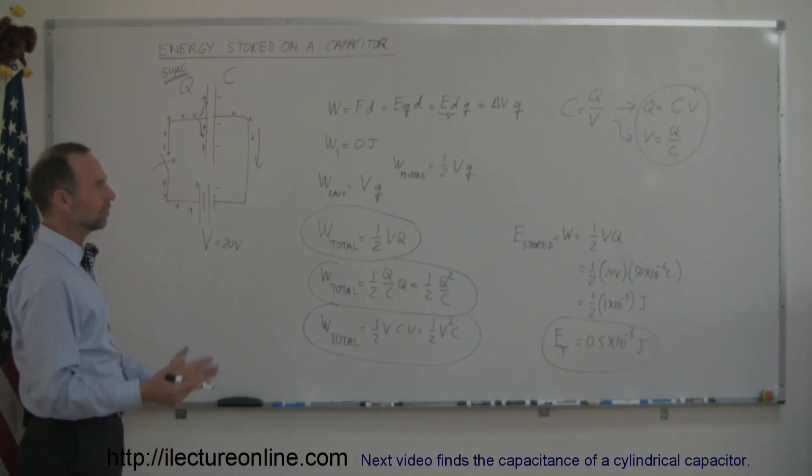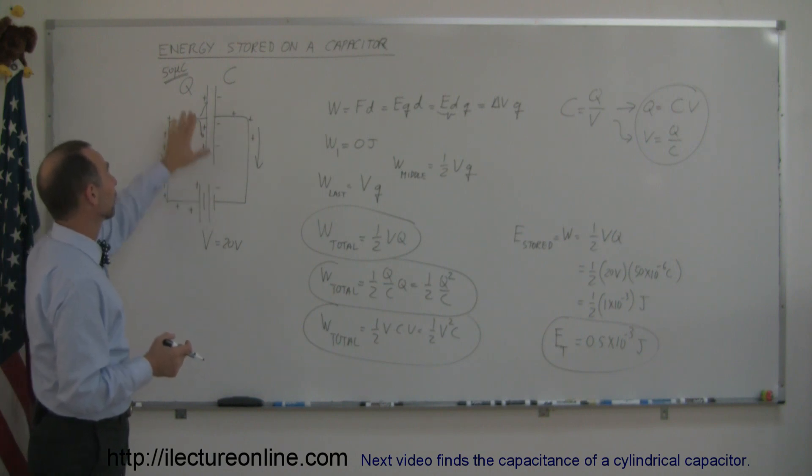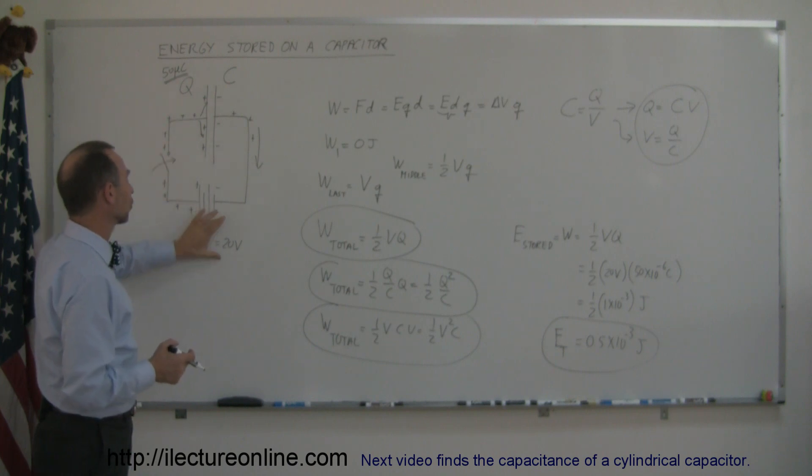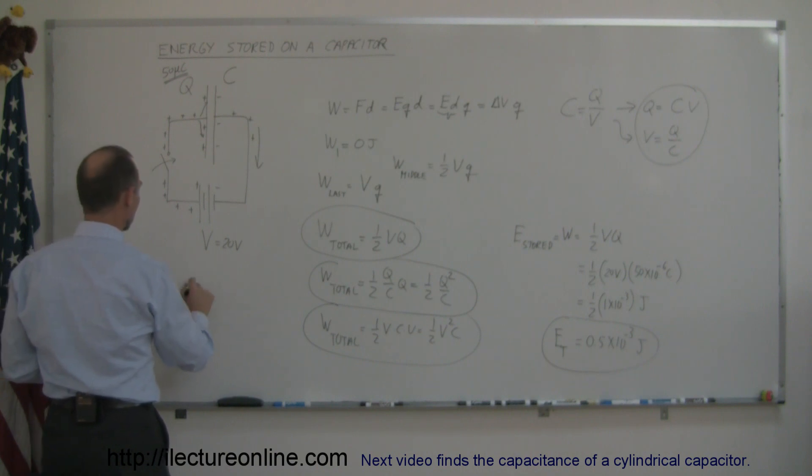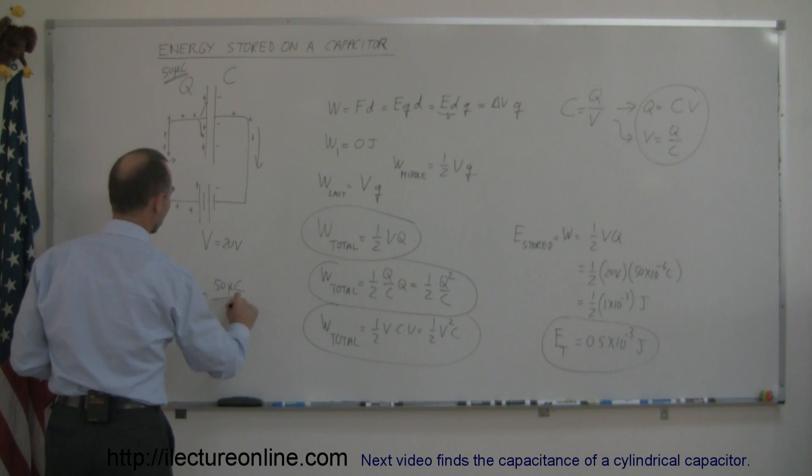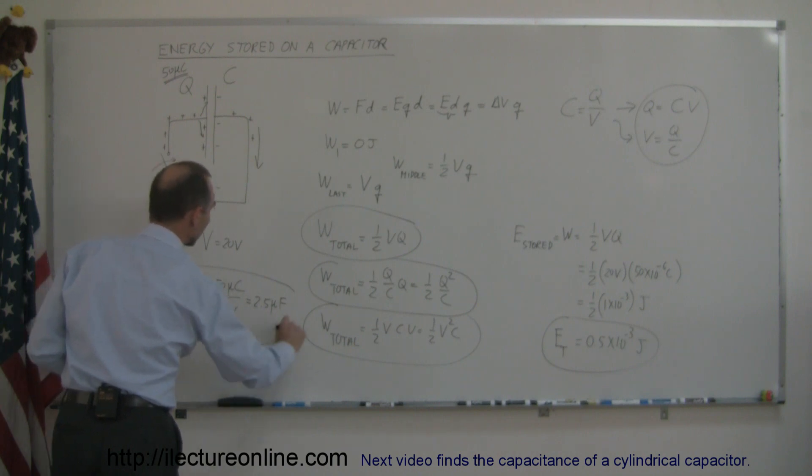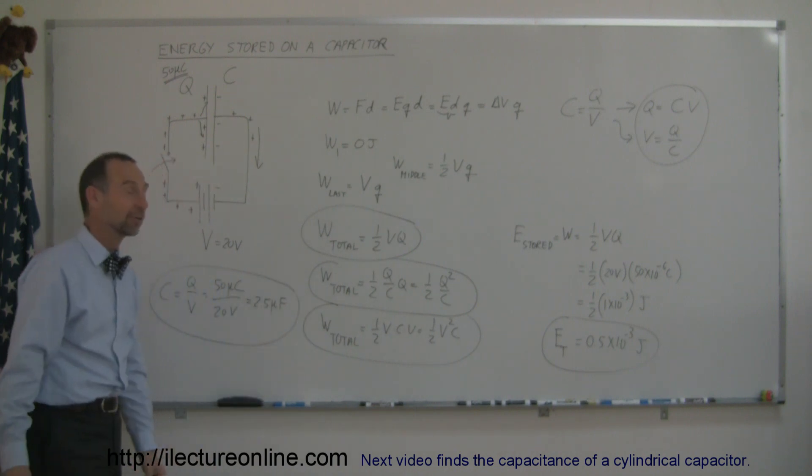And just for, let's see if we remember this, how big is the capacitor? What is the capacitance of a capacitor that will store 50 micro coulombs of charge when there's 20 volts applied? Well, then we go back to that equation right there, and we can say that capacitance is equal to the charge divided by the voltage, which is equal to 50 micro coulombs divided by 20 volts, which is equal to 2.5 micro farads. So in this case, we're dealing with a 2.5 micro farad capacitor.